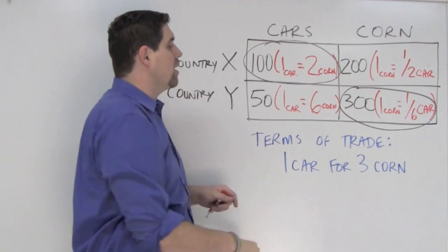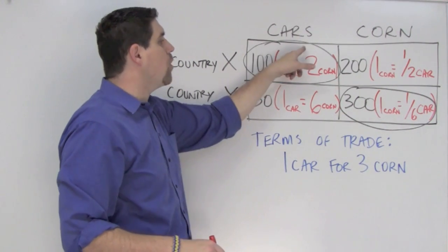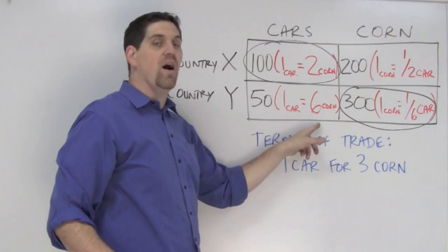In other words, one car for three corn works, one car for four, one car for five. But if it's one car for one corn or one car above six corn, it's not going to be beneficial for both countries.